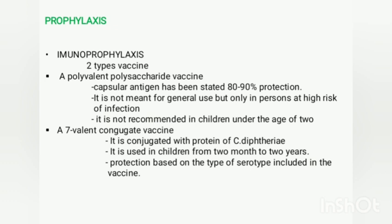The polyvalent polysaccharide vaccine is not for general use — it is only for persons at high risk of pneumococcal infection, such as those with liver disease, heart disease, diabetes, or immunodeficiency. It is also not recommended for children under two years of age.